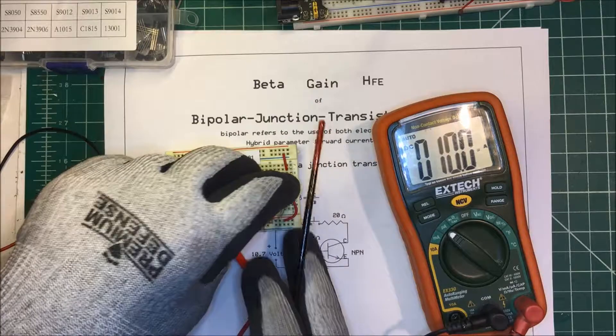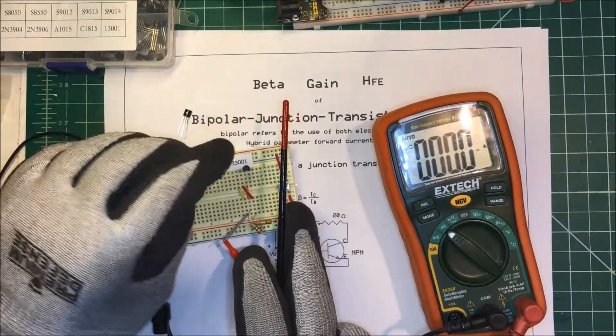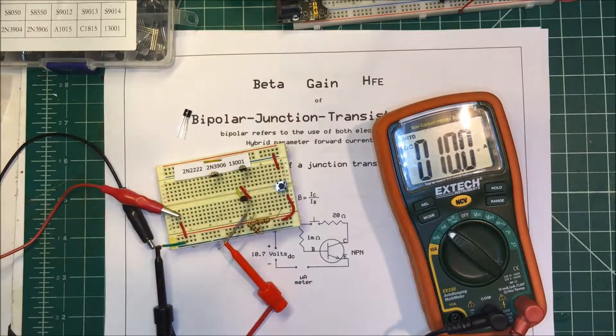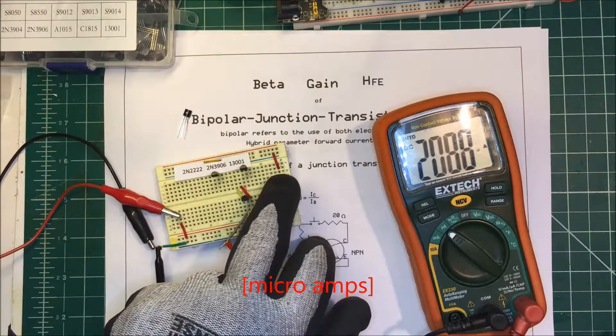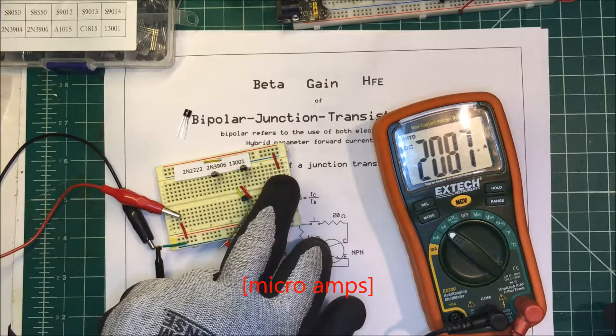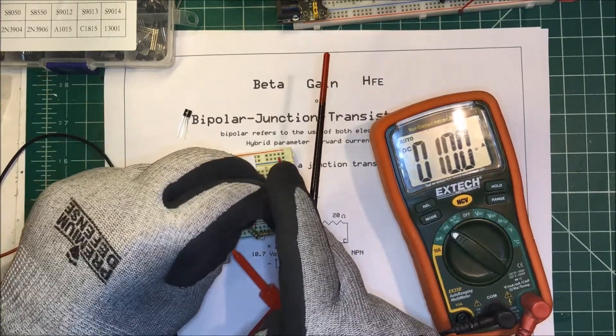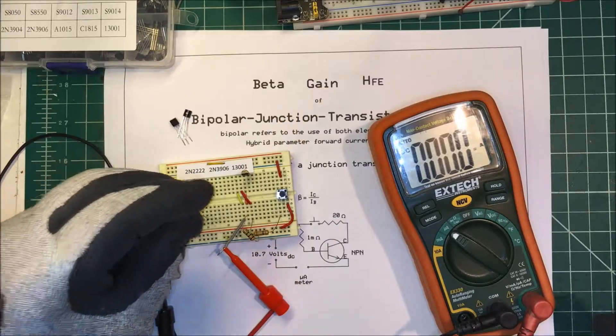This is a 2N222. I've got another one here—we'll try that one. 10 milliamps. This has to be about 208, pretty close.